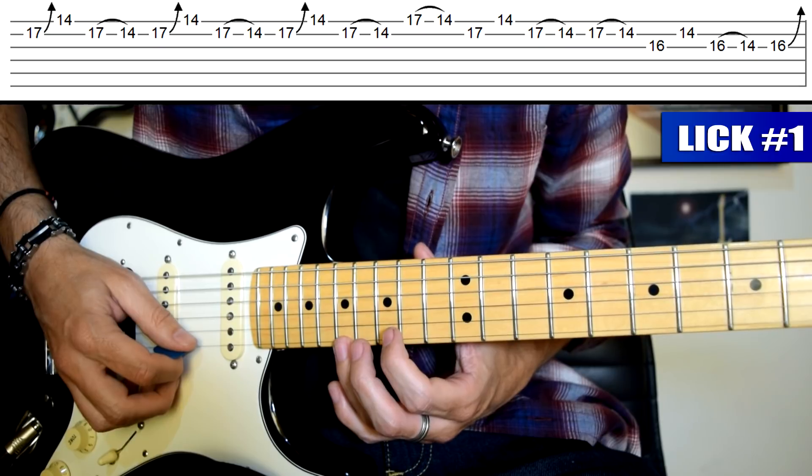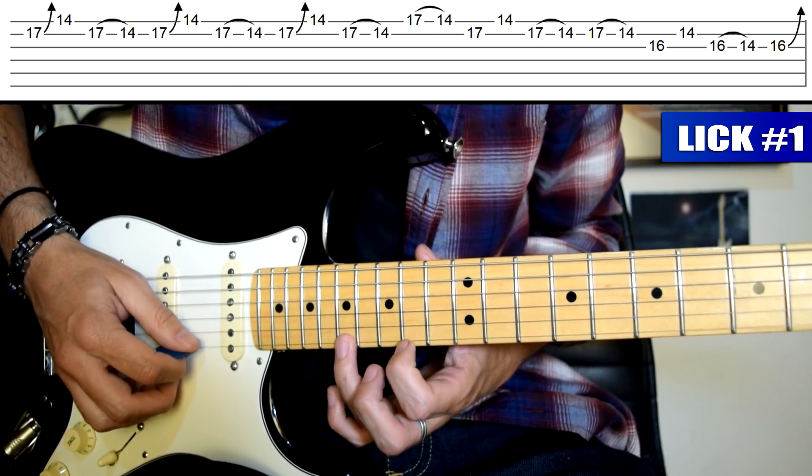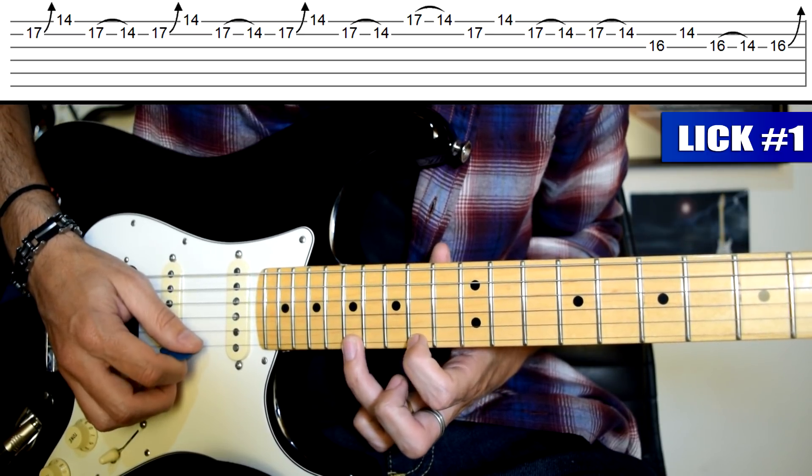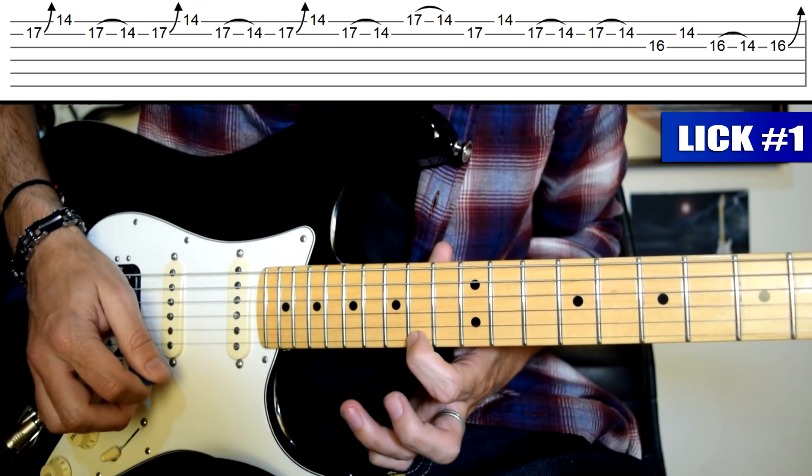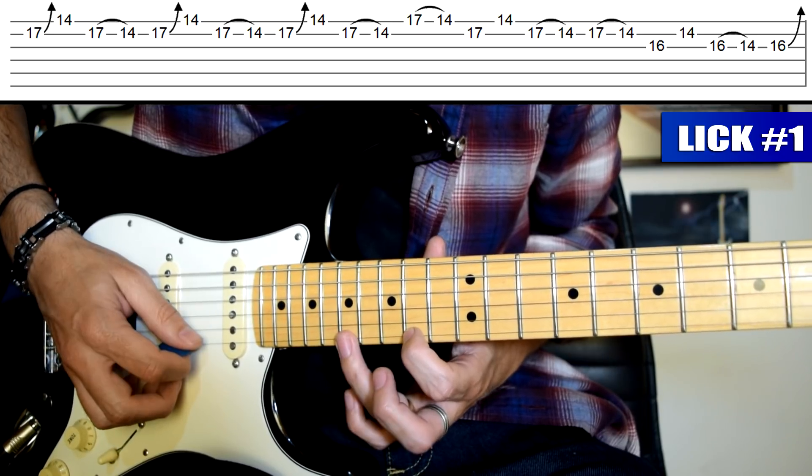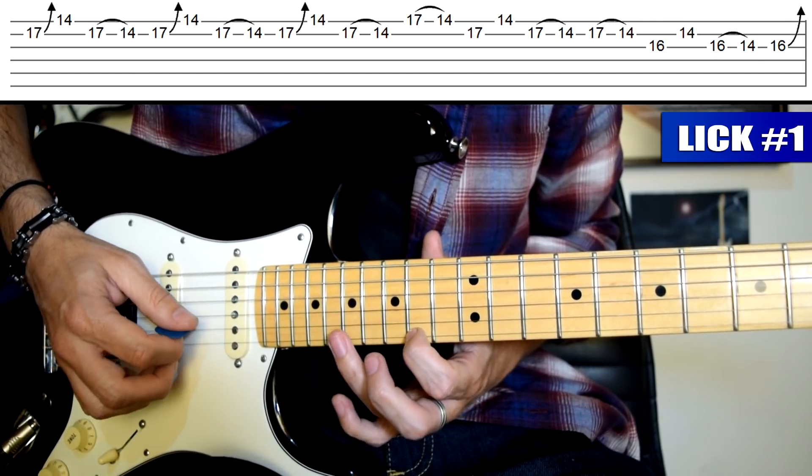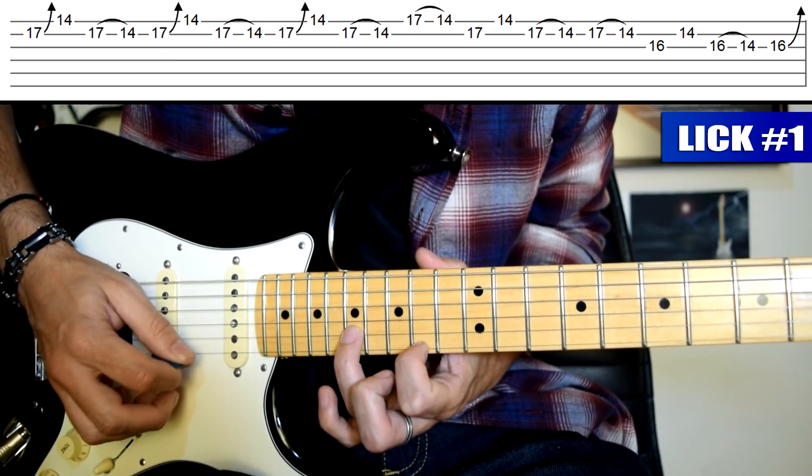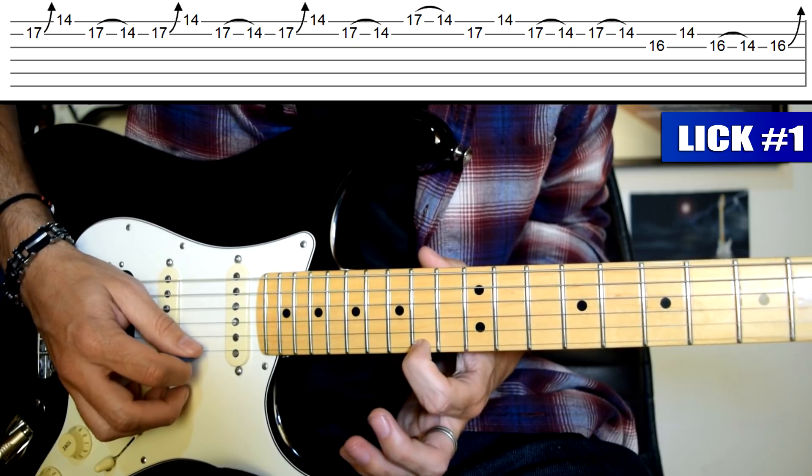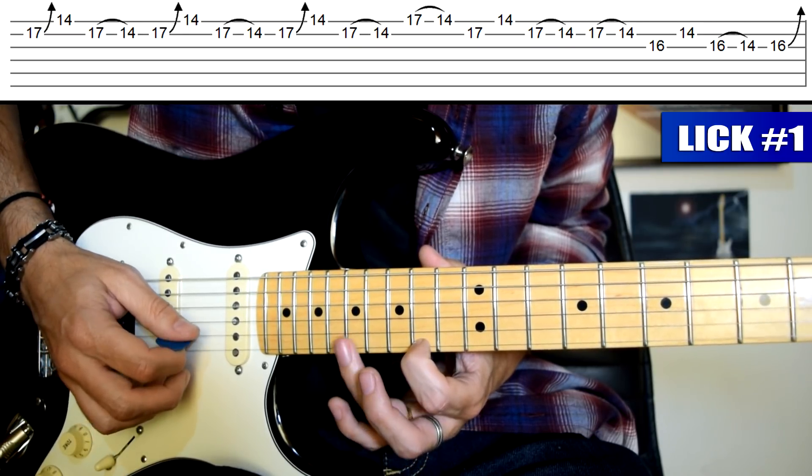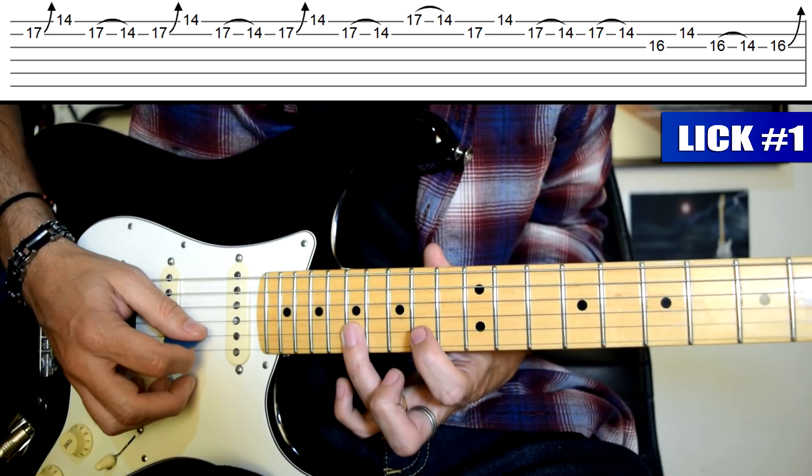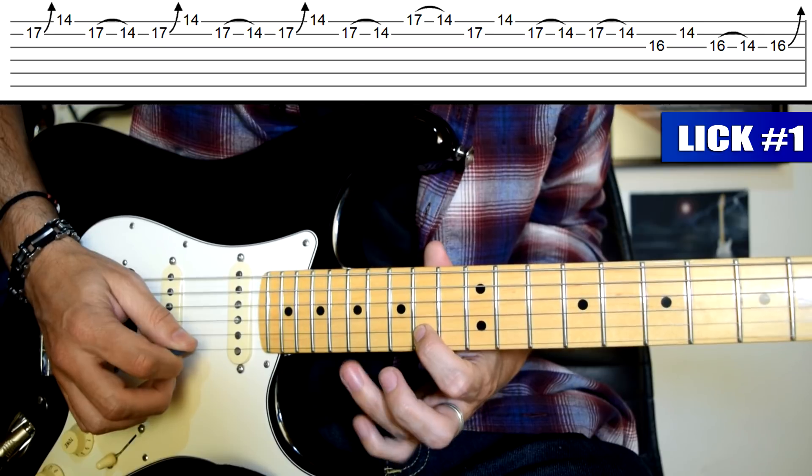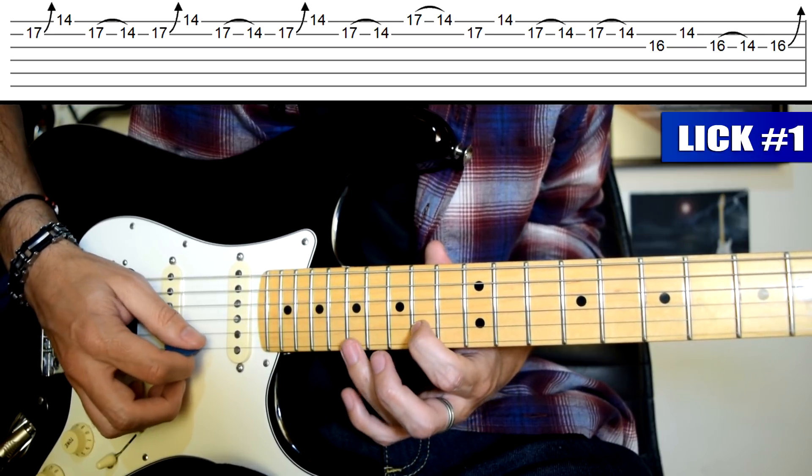Y ahora voy a hacer una serie de ligados. Llevo el dedo 3 al traste 17 de cuerda 1 y a la vez el dedo 2 en el traste 14 de cuerda 1, púa abajo en cuerda 1. Y levanto y pellizco con el dedo 3 la cuerda 1. Sin quitar el dedo 1, dedo 3 traste 17 de cuerda 2, púa abajo en cuerda 2. Levanto el dedo 3, púa arriba en cuerda 1.